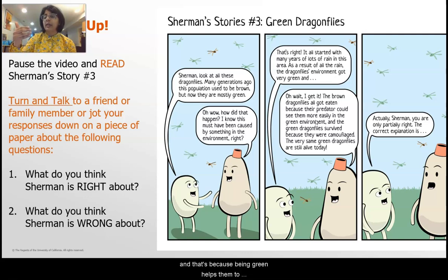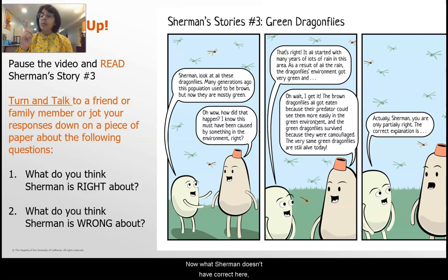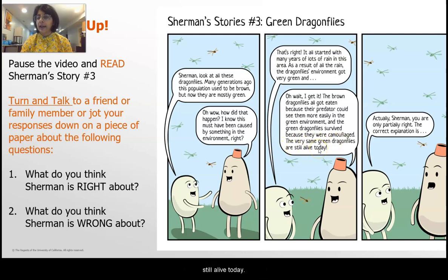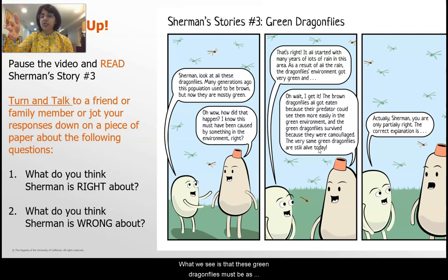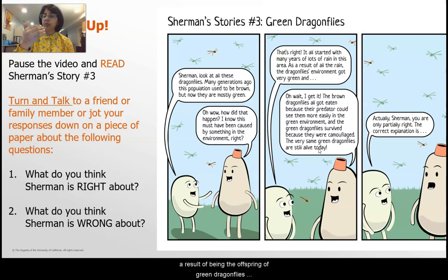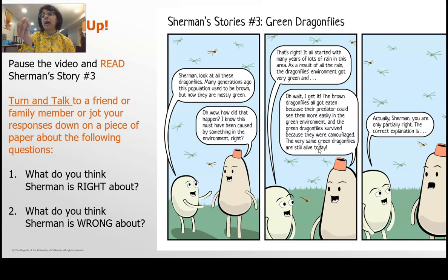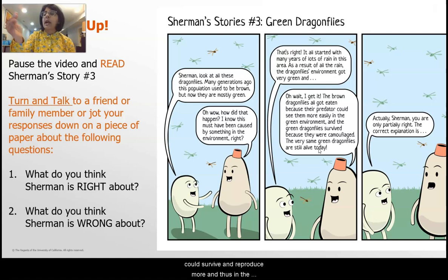Being green helps them to camouflage and thus survive and reproduce more. What Sherman doesn't have correct is when he says the very same green dragonflies are still alive today — that's not true. These green dragonflies must be the offspring of green dragonflies from generations ago. Those original green dragonflies have died, and the offspring carry on the adaptive trait of being green because they could survive and reproduce more. Thus, in the environment, now we have more green than brown dragonflies.